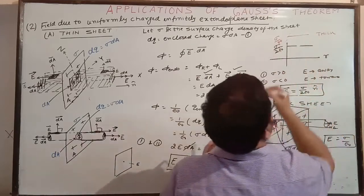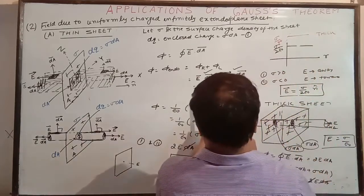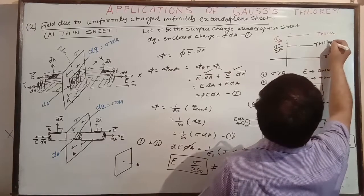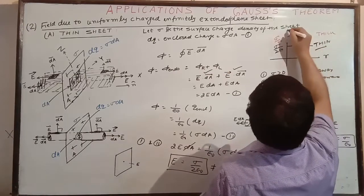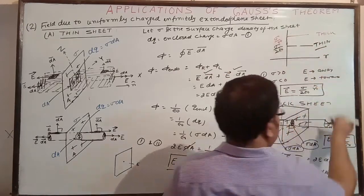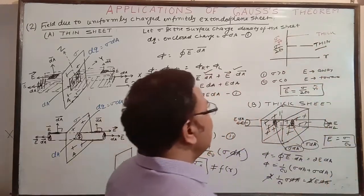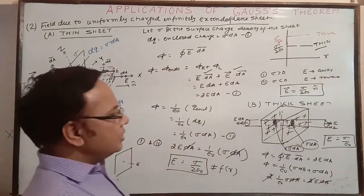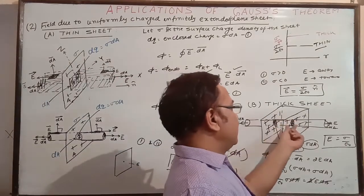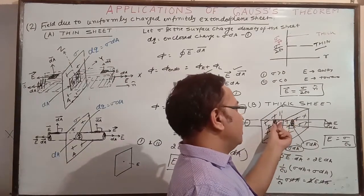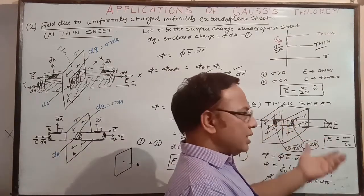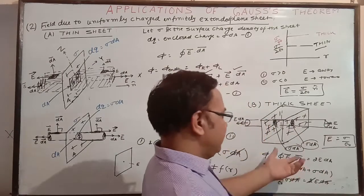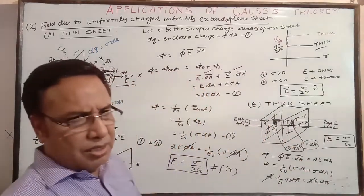For a thick sheet the electric field is sigma / epsilon_naught, which is just double that of the thin sheet result of sigma / (2 epsilon_naught). This case has not appeared in exams yet, but it is useful to understand. For the thick sheet, charges from both sides are contributing.